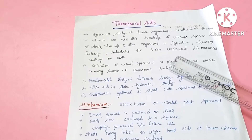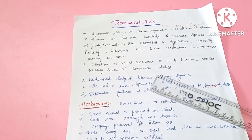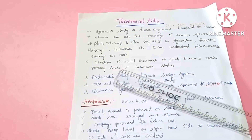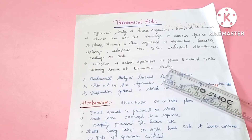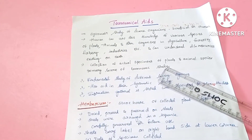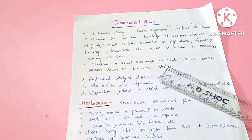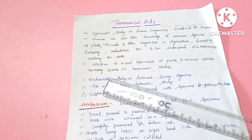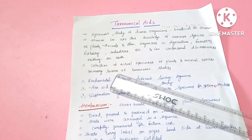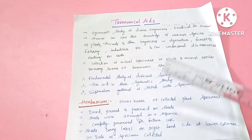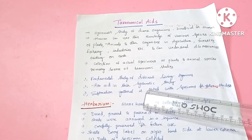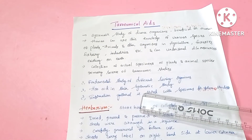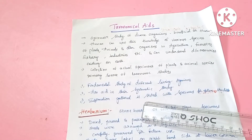The most important thing is the collection of actual specimens. Actual specimens can be plants, animals, in dead form or living form. From the specimen, we study morphology. The primary source is collection of actual specimens, and we conduct fundamental studies of different living organisms including basic studies of animals — morphology, functions, and reproduction.